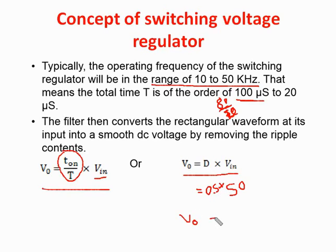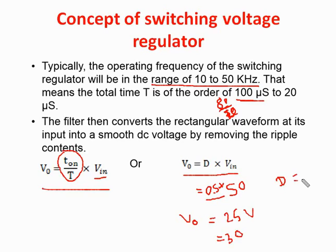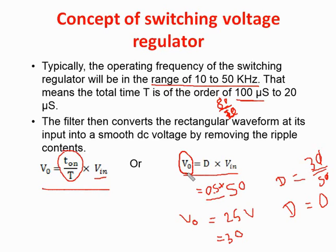To get 30 volts at the output from a 50-volt input, we have to increase the duty ratio. D equals output voltage (30 V) divided by input voltage (50 V), which gives us the required duty cycle to obtain 30 volts at the output side. By changing the duty cycle we control the output voltage Vout.